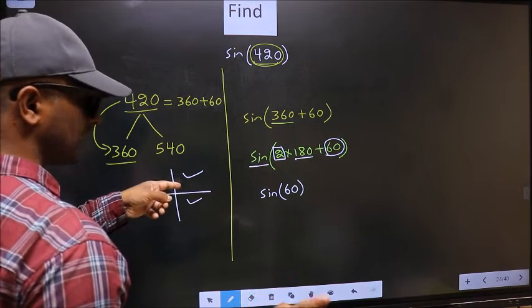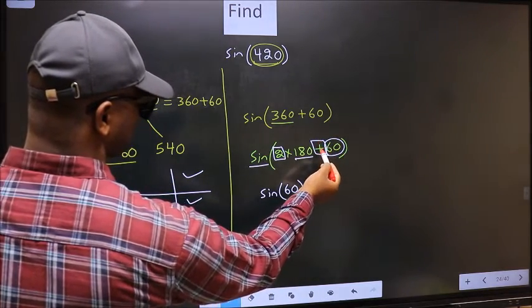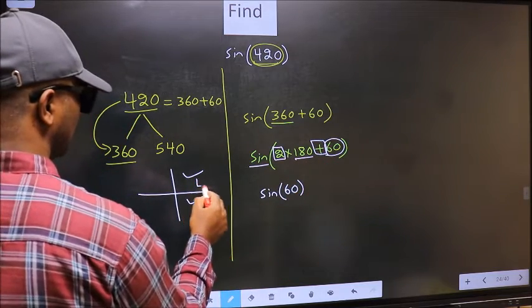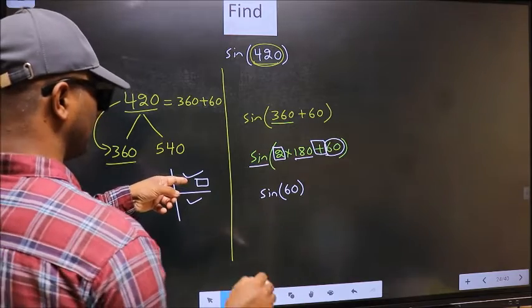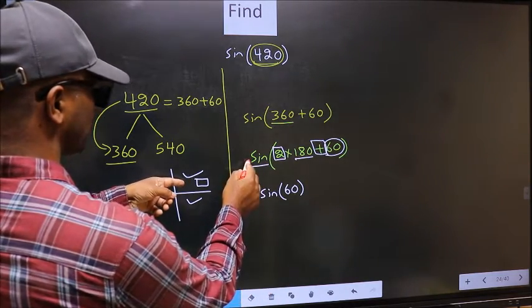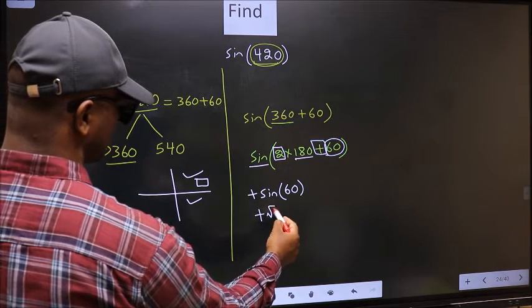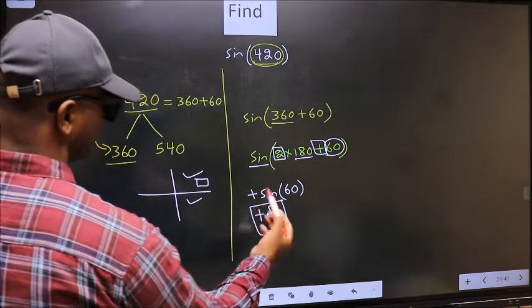So now to select the quadrant, we should look at this symbol. Here we have plus. That means the angle lies in the first quadrant. In the first quadrant, sin is positive, so we should put plus. So plus sin 60 is root 3 by 2. This is our answer.